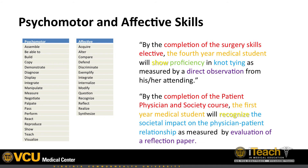Psychomotor skills are the next most common form of objective and often reflect physical or performance-based skills. Using the template, one may word a psychomotor objective like this: by the completion of the surgery skills elective, the fourth-year medical student will show proficiency in knot tying as measured by direct observation from his or her attending. The when is the end of the elective, the who is an M4 level student, the verb and degree are linked in 'show proficiency,' the what is knot tying, and the assessment is direct observation by an attending who can assess the student for proficiency in the skill.